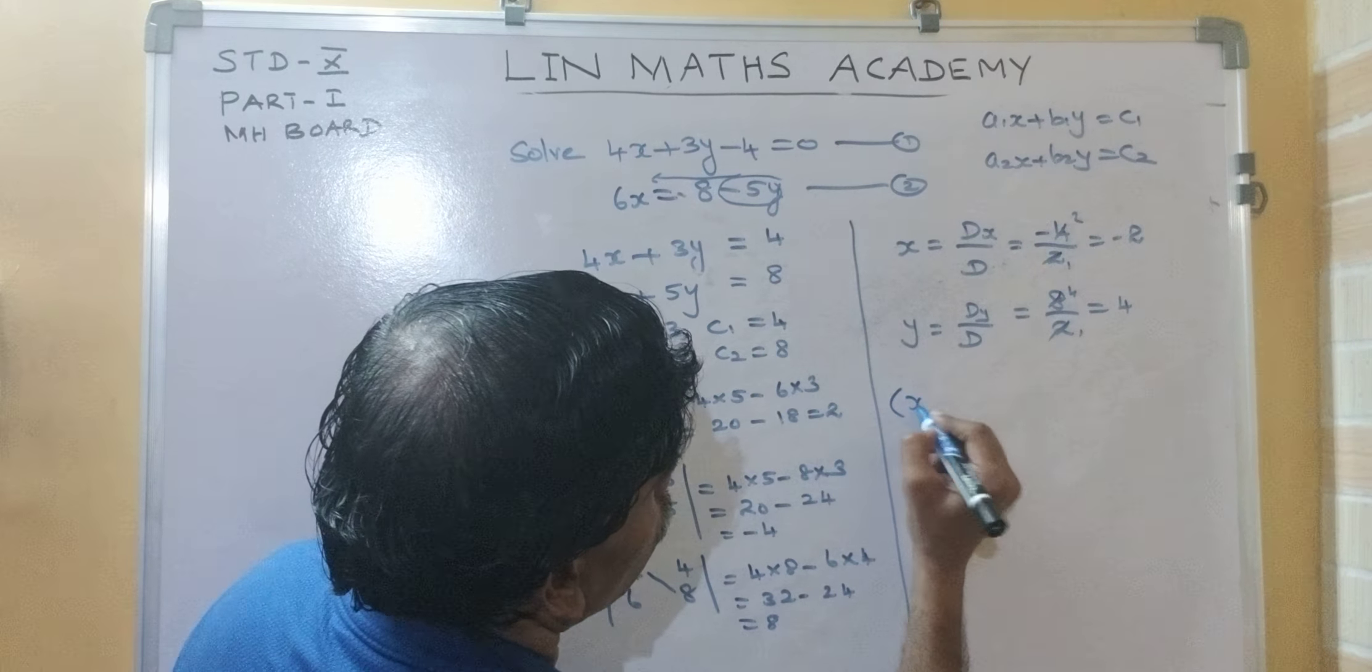So, 54 into 2 minus 28 into 6. 108 minus 168 equal to minus 60.